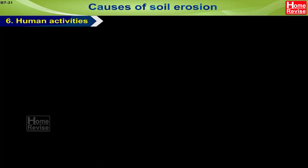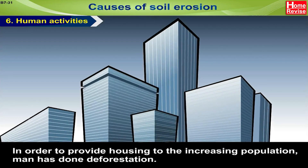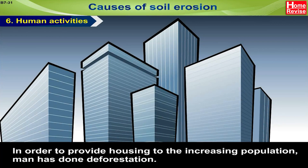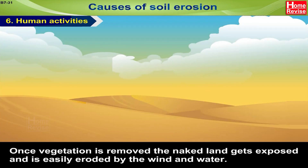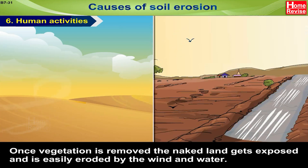Human activities: in order to provide housing to the increasing population, man has done deforestation. Once vegetation is removed, the naked land gets exposed and is easily eroded by wind and water.